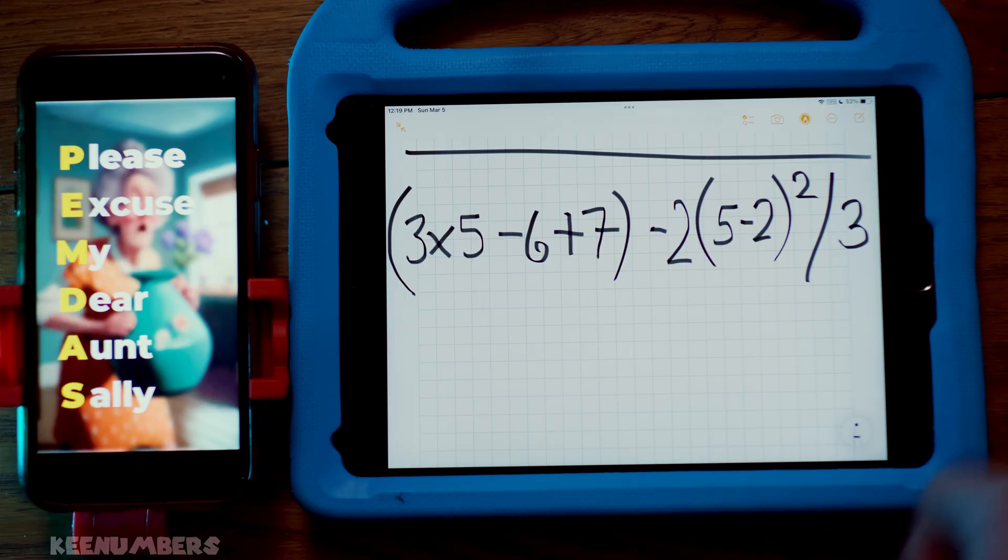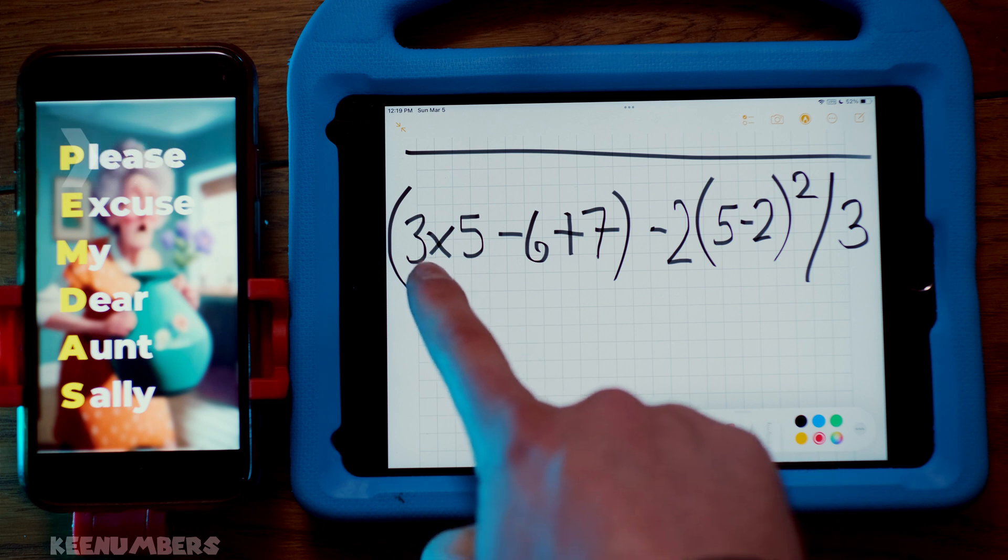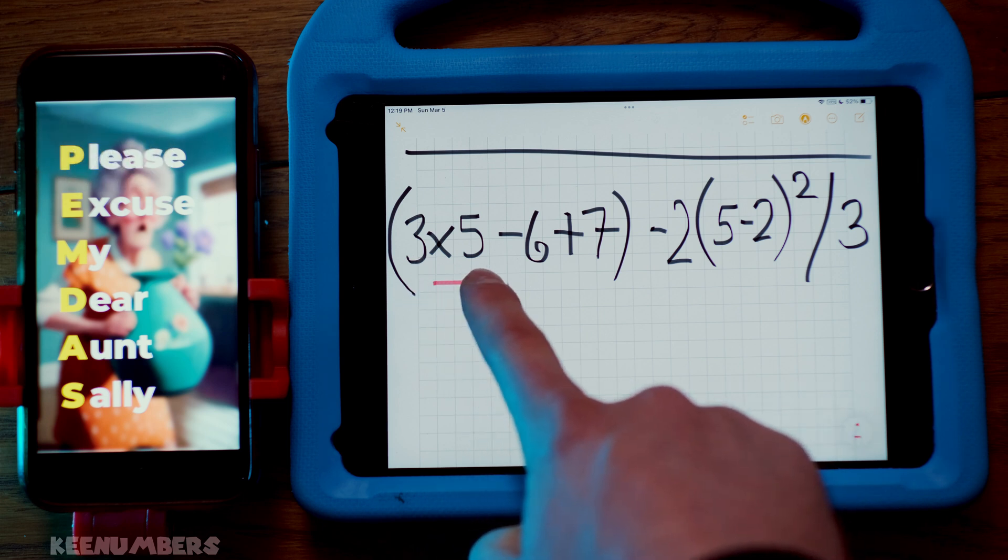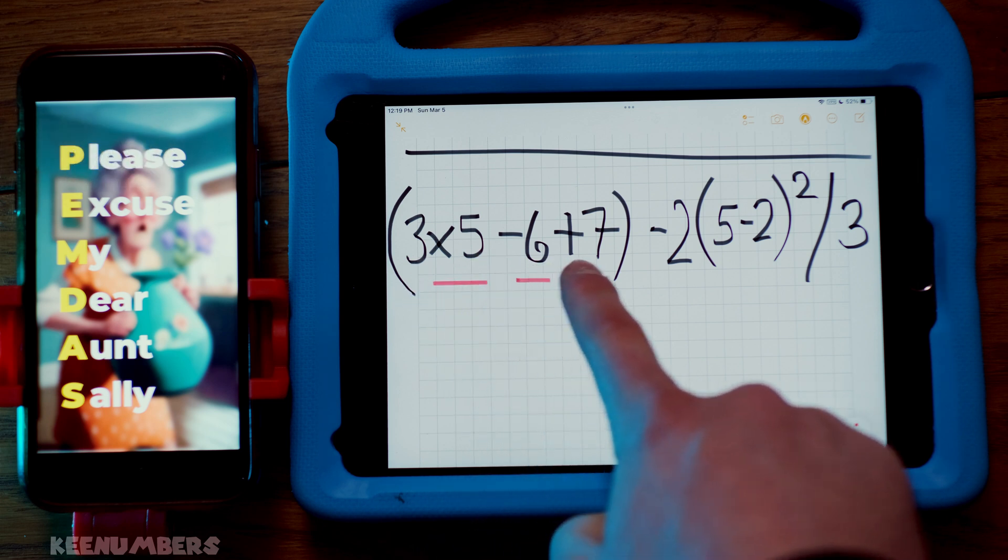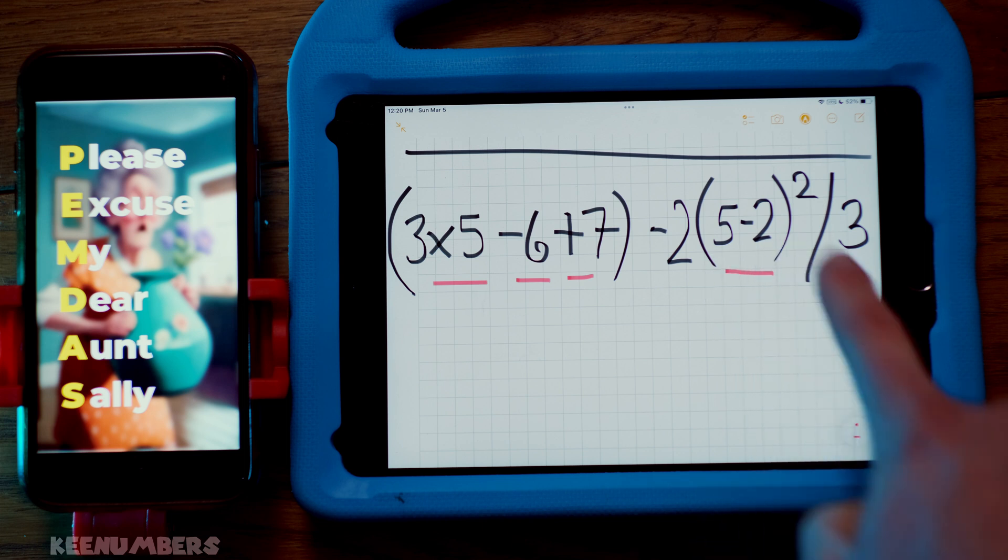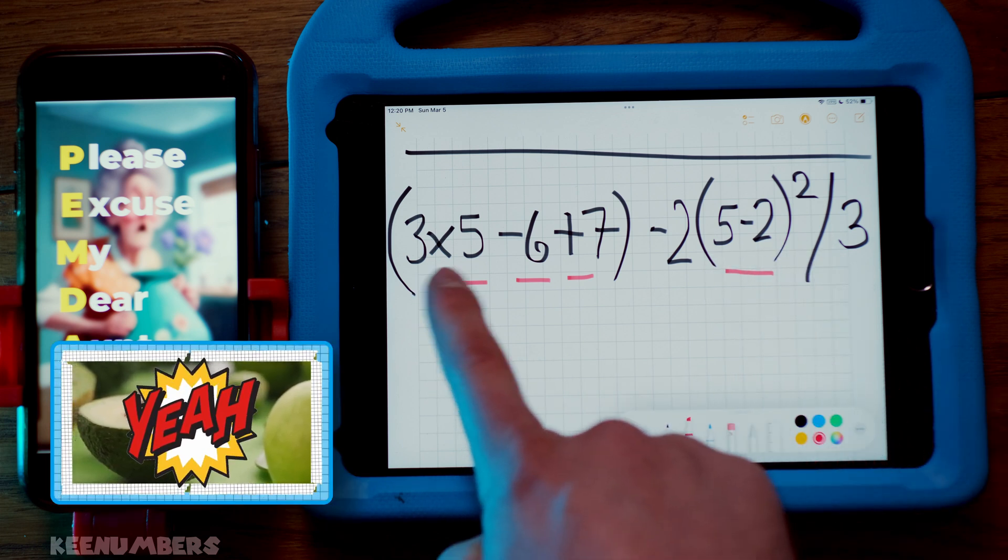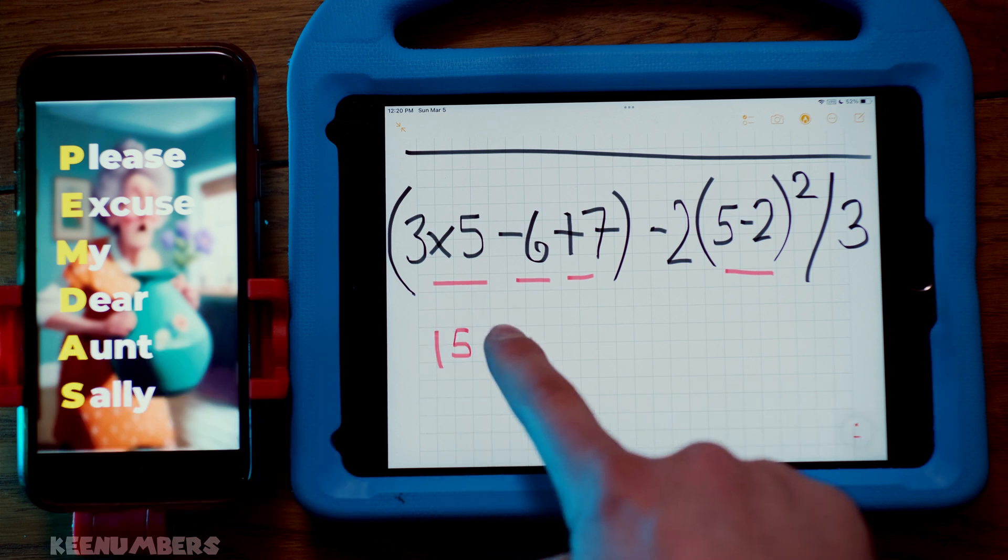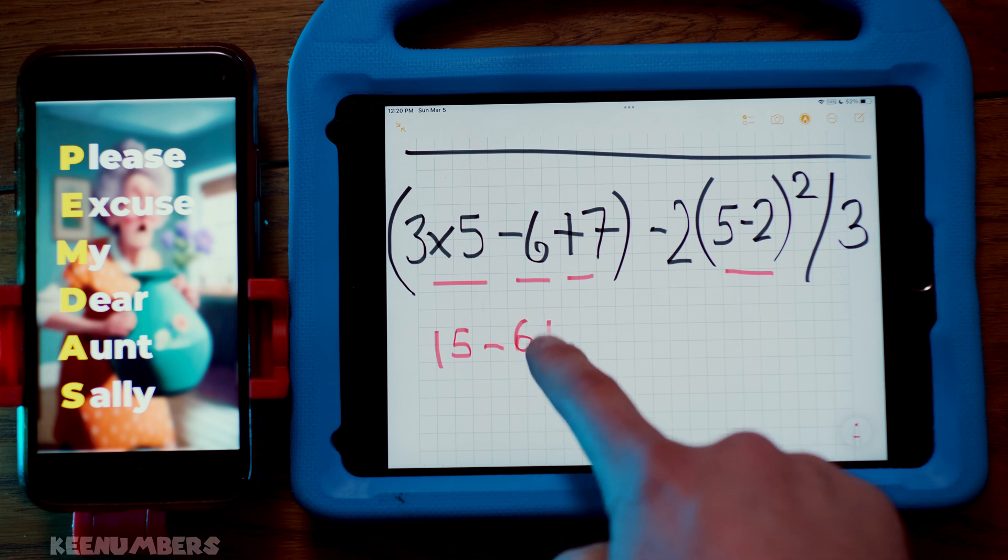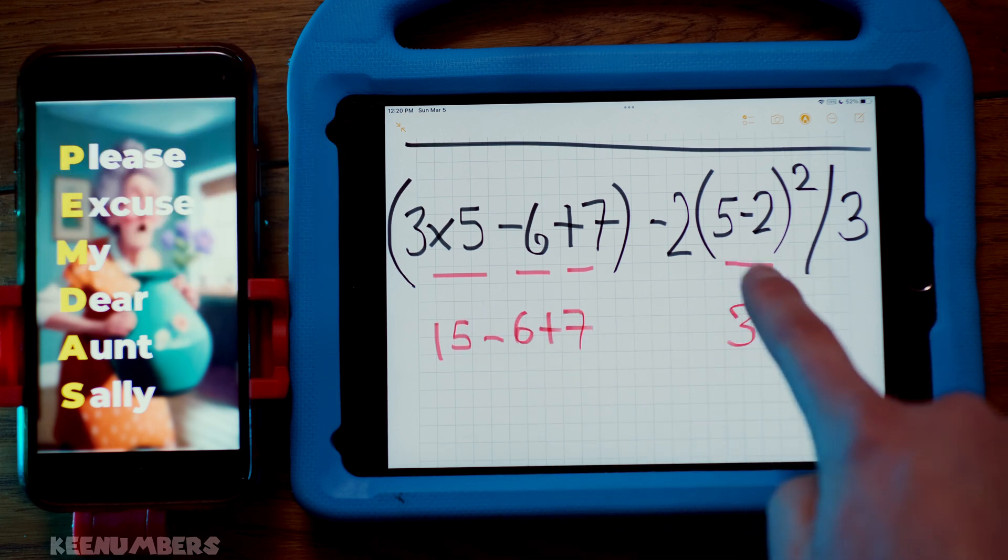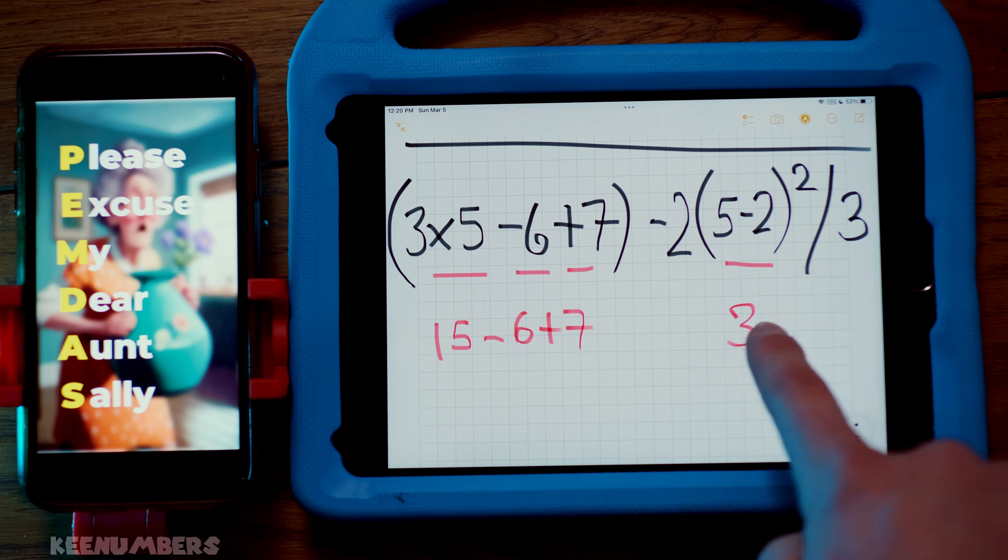Please excuse my dear Aunt Sally. Tackle those parentheses first. Well, what goes inside these parentheses? Ooh, it's three by five minus six plus seven. And inside this parentheses, we have five minus two. It's a whole lot of action. Okay, don't get scared now. Three by five, that's 15. And then you're gonna subtract six and add seven. That's what's inside those parentheses. Five minus two. That's a friendly face. You know that one. It's just three.